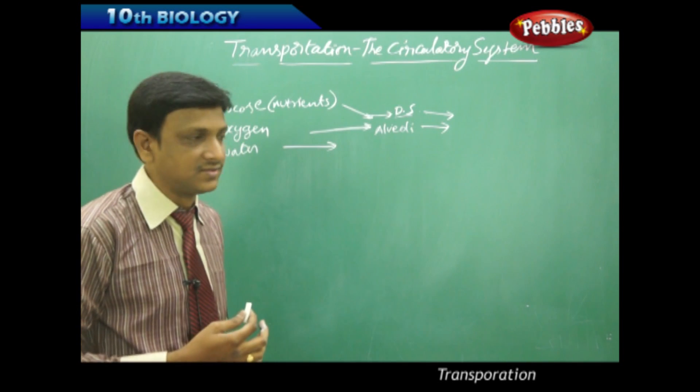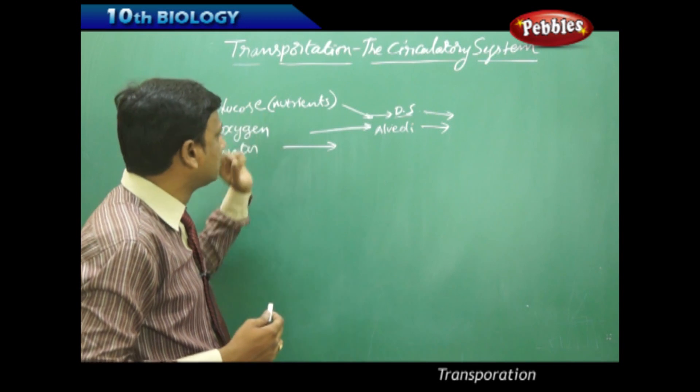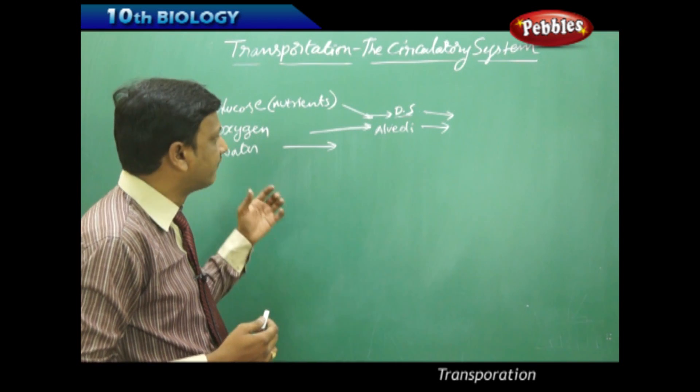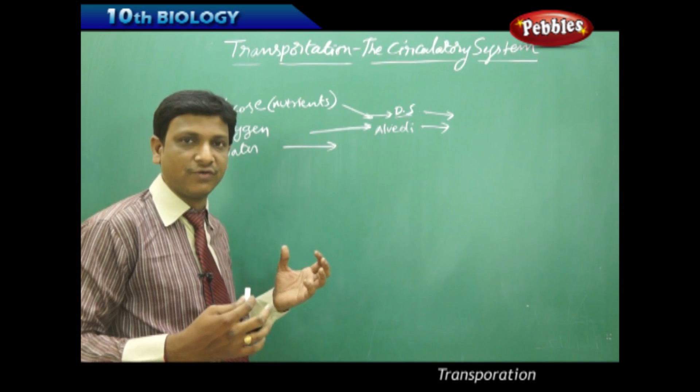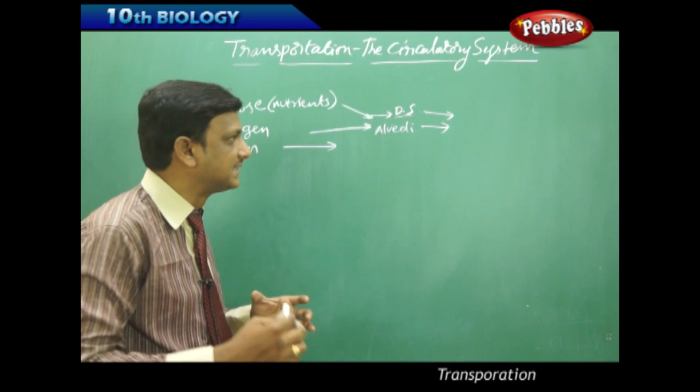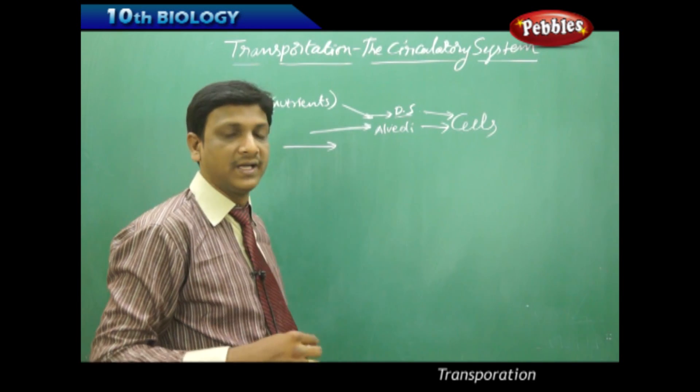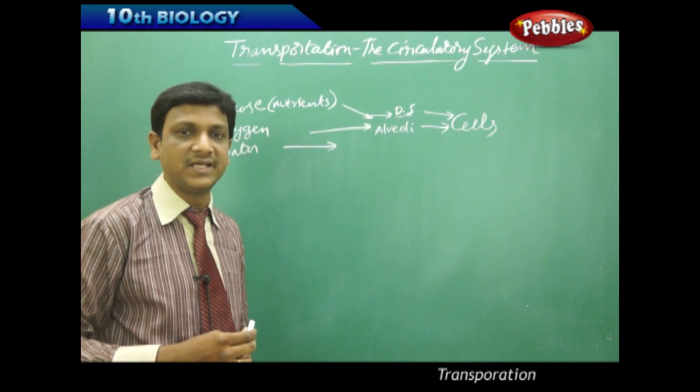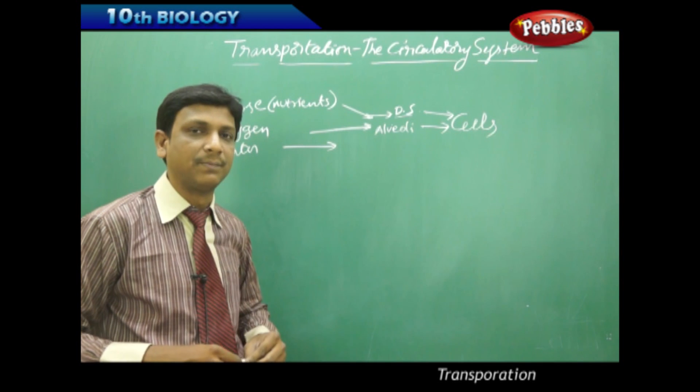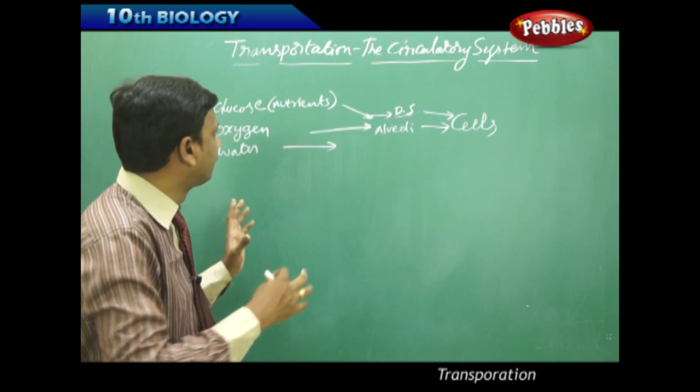The circulatory system transports various substances, that is the glucose or other nutrients like amino acids, fatty acids, vitamins, minerals. Everything which is obtained by the digestion of food in the digestive system. From the digestive system, these nutrients are carried and supplied to all the cells by the transport system. Even the oxygen is to be supplied to each and every cell. Cellular respiration must take place to produce the energy.